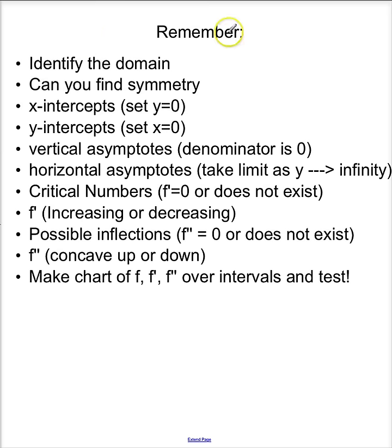Now, remember, identify the domain. Look for symmetry. Look for your x-intercepts, your y-intercepts, your VAs, your vertical asymptotes, your horizontal asymptotes. We call these HAs. They're funny. Critical numbers.